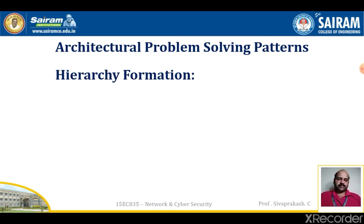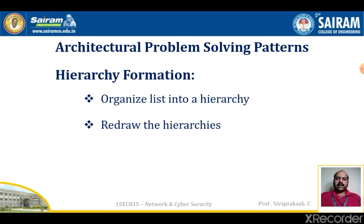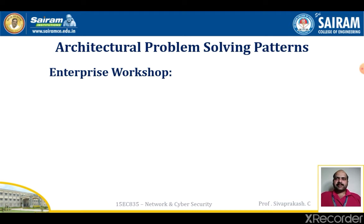Hierarchy formation is a card-on-the-wall exercise done with small groups. You organize each list into a hierarchy, possibly inventing some new categories in the middle of the tree, then redraw it electronically and print it as readable posters. This results in six hierarchies that populate row two of the framework.